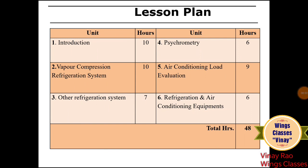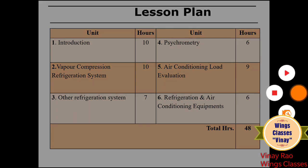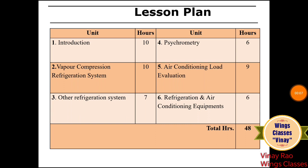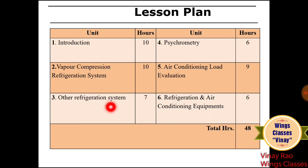Hello friends, I am Vinay and this is a starting lesson plan. In this lesson plan we divide the total content into six units. Unit 1 is Introduction, Unit 2 is Vapor Compression Refrigeration System, Unit 3 is Other Refrigeration Systems, including ammonia, lithium bromide, electrolux, and vapor absorption refrigeration systems.